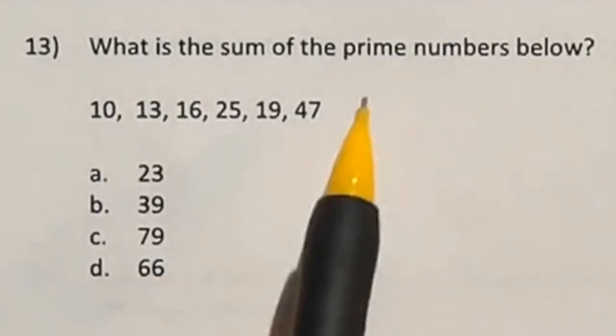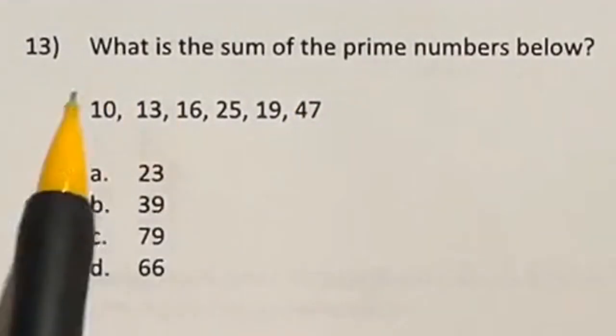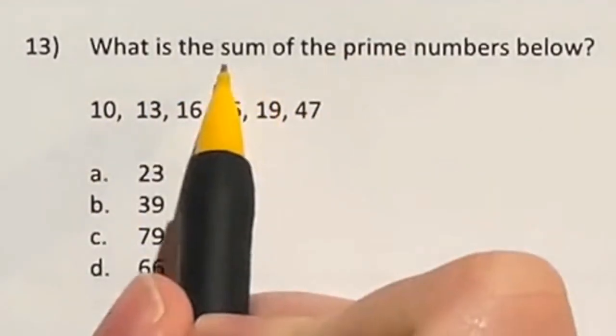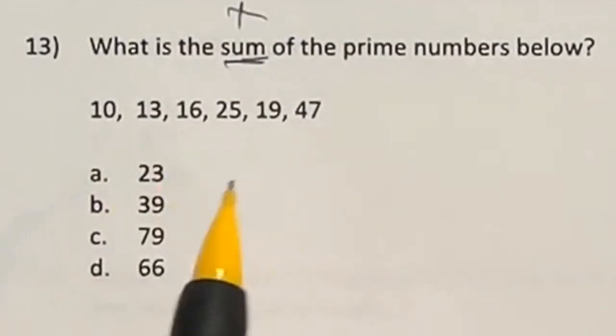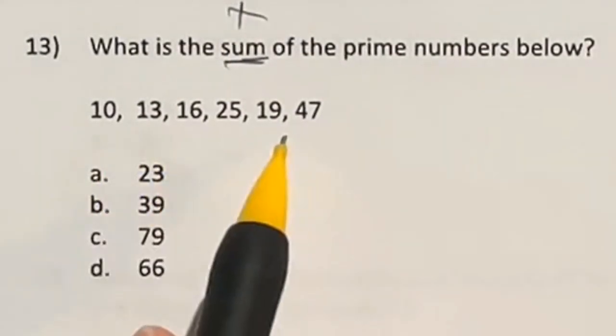What is the sum of the prime numbers listed below? So in this case, we're not adding all of these together. That's what sum means, adding them together. We're just adding the prime ones. Well, out of this number, prime means that it's only divisible by that number and itself.